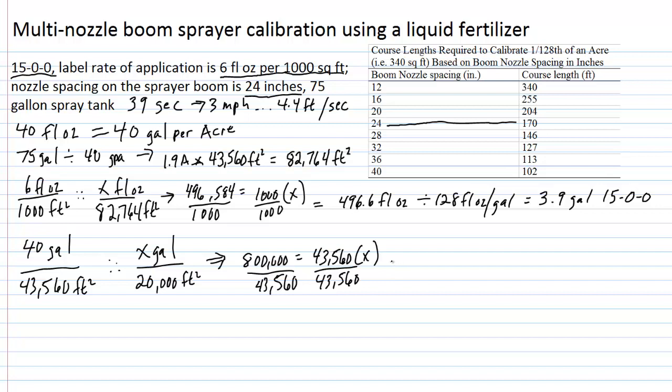Okay, and you end up with an answer of X equals about 18.4 gallons is how much your final spray volume is going to be in the tank in order to cover 20,000 square feet. Now, we still haven't determined how much fertilizer is required to go into this 18.4 gallons.